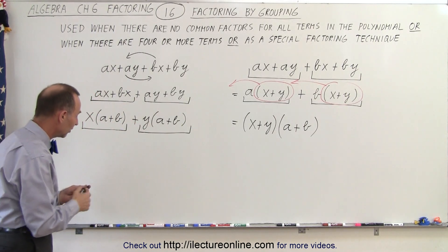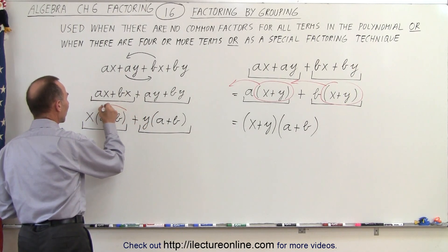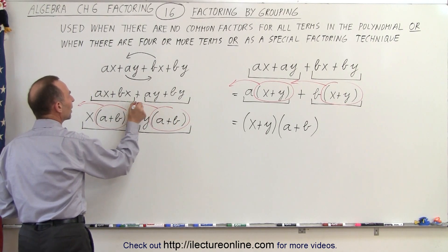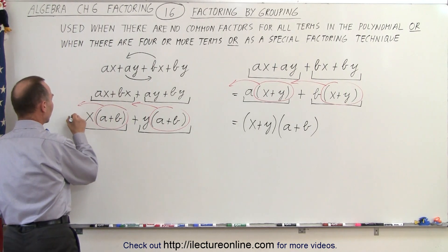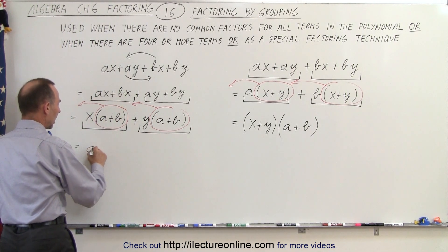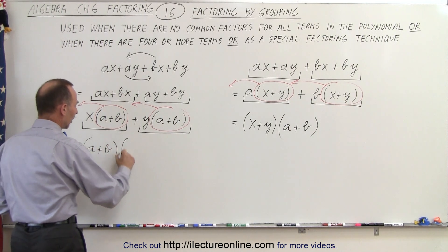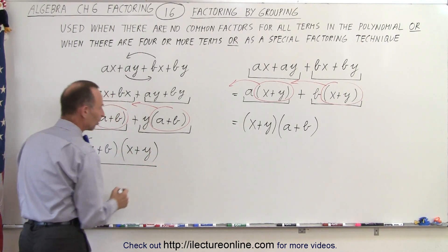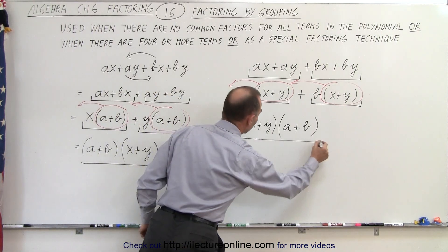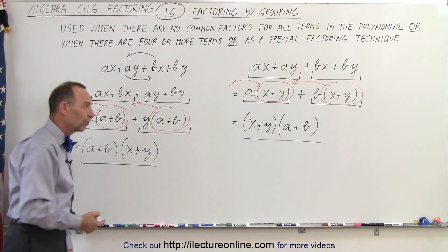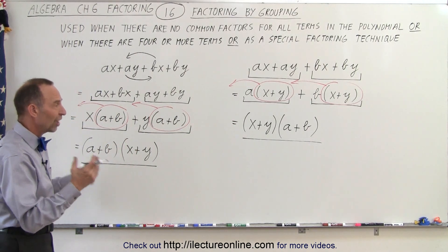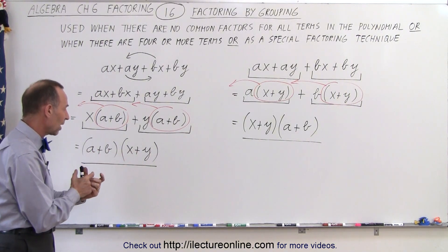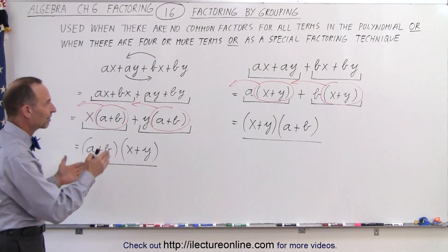Again we end up with a summation of two terms — x(a + b) and y(a + b) — and notice they again have a common factor: (a + b). We factor out (a + b) and we're left with (a + b)(x + y). Notice we get the exact same result — here it says (a + b)(x + y) and there it says (x + y)(a + b) — which is of course exactly the same because of the commutative property: we can move factors around when they're multiplied and it makes no difference.